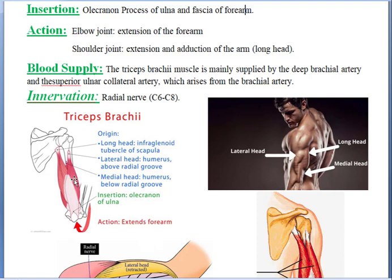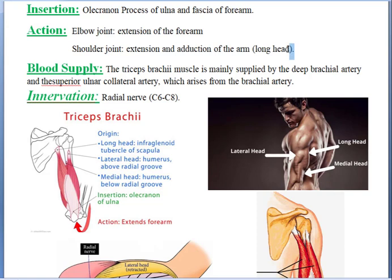What are its actions? The triceps muscle is responsible for extension of the forearm — when the triceps contracts, the forearm is pulled backward. At the shoulder joint, it is responsible for extension and adduction of the arm. Specifically, the long head of the triceps is responsible for adduction and extension of the arm.